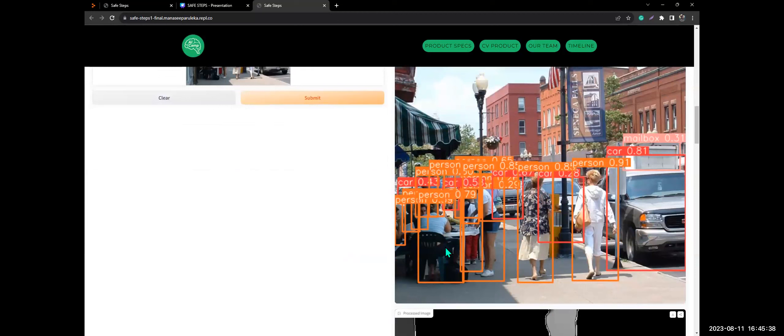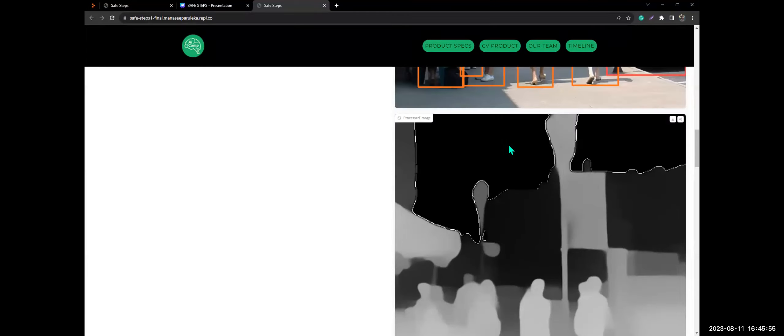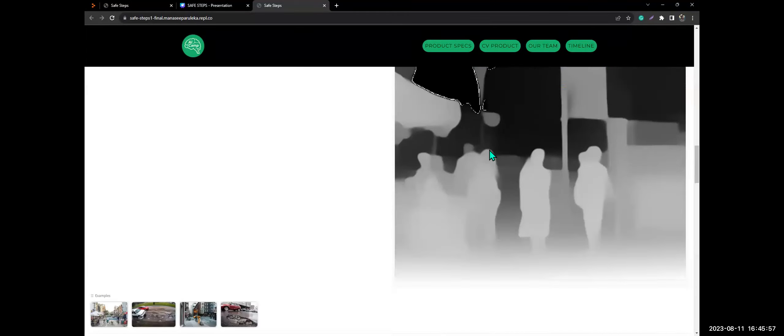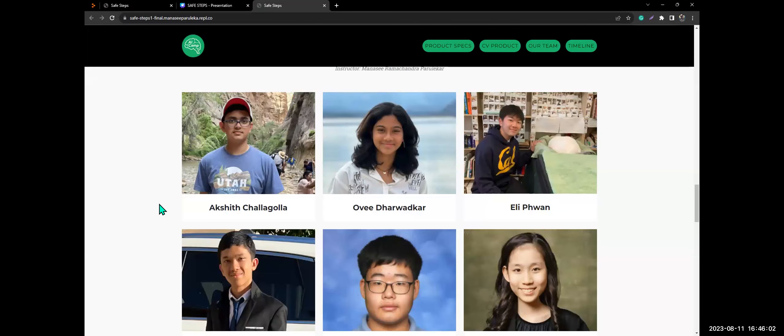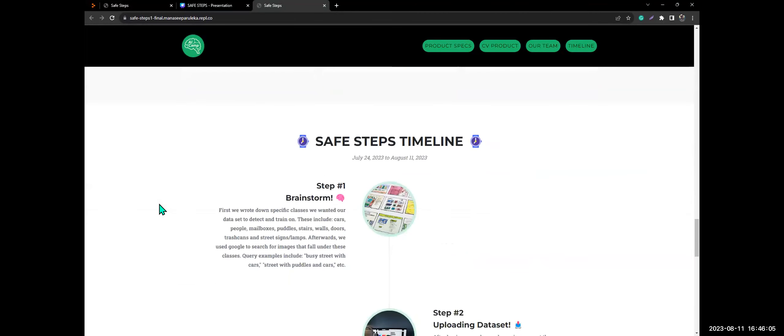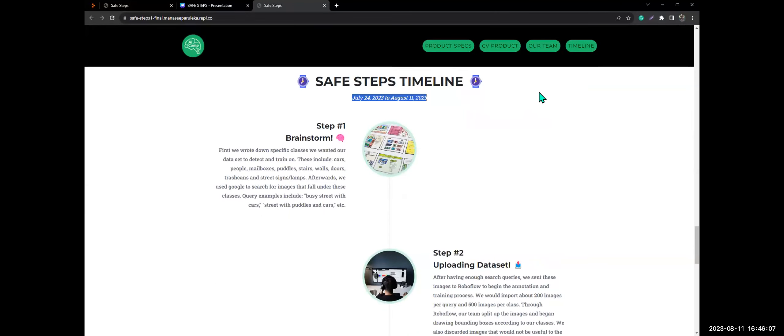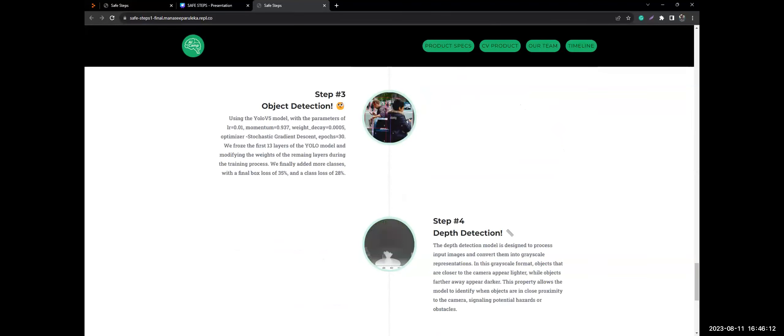Here in the test, all the people up close and even in the background, as well as the cars. And here is the depth estimation where the people who are closer show up as white and the objects in the background are black because they're far away. Our team is right here and you can click on us to find out more about us. Here's our timeline, which has even more information about the processes all the way up to the finish line.